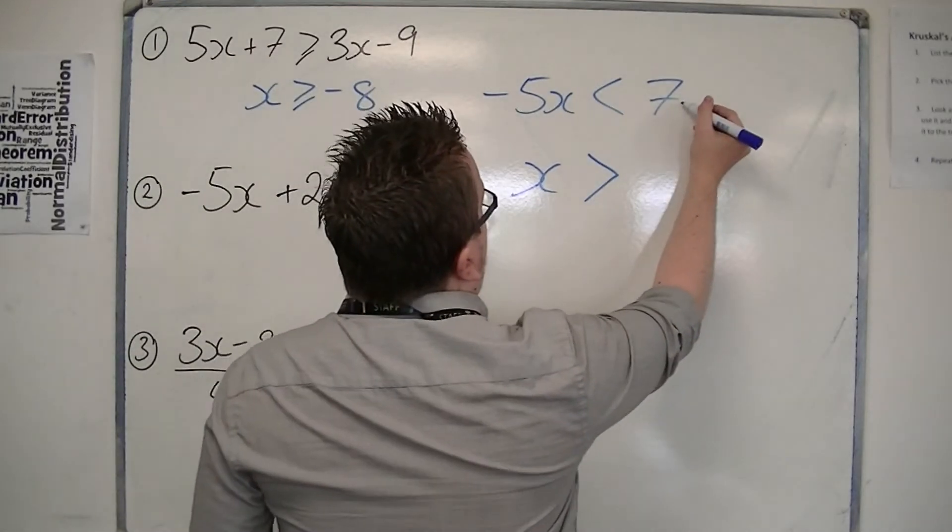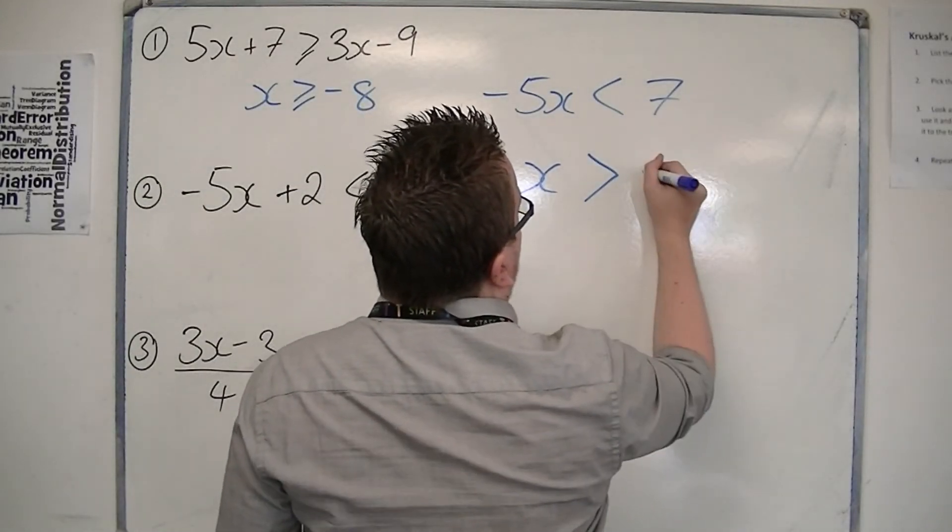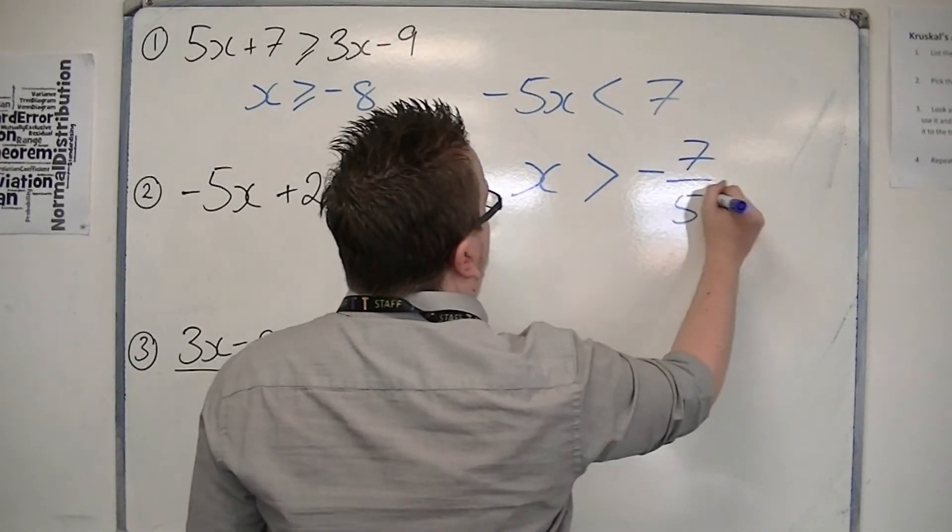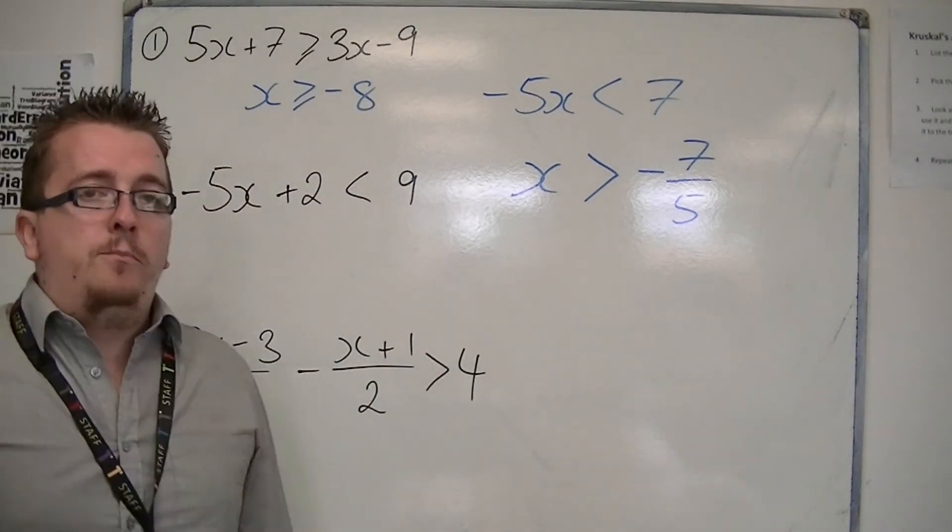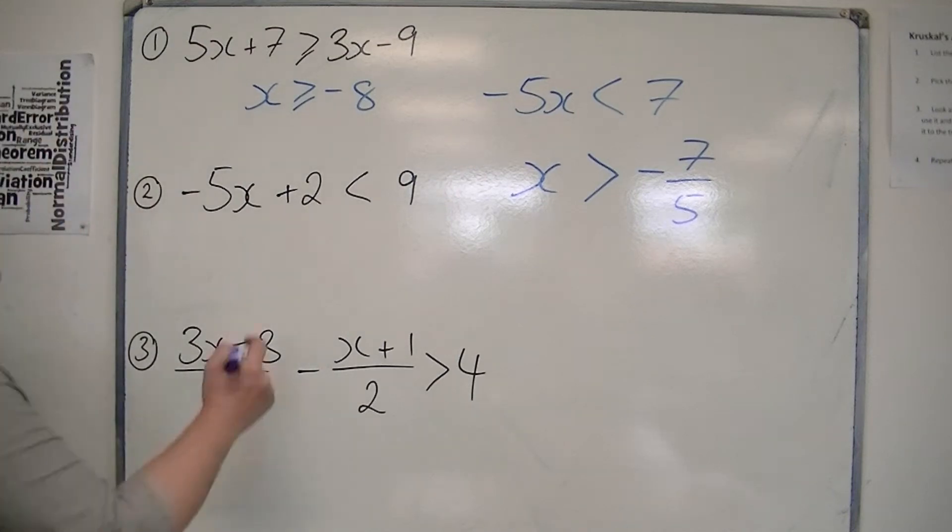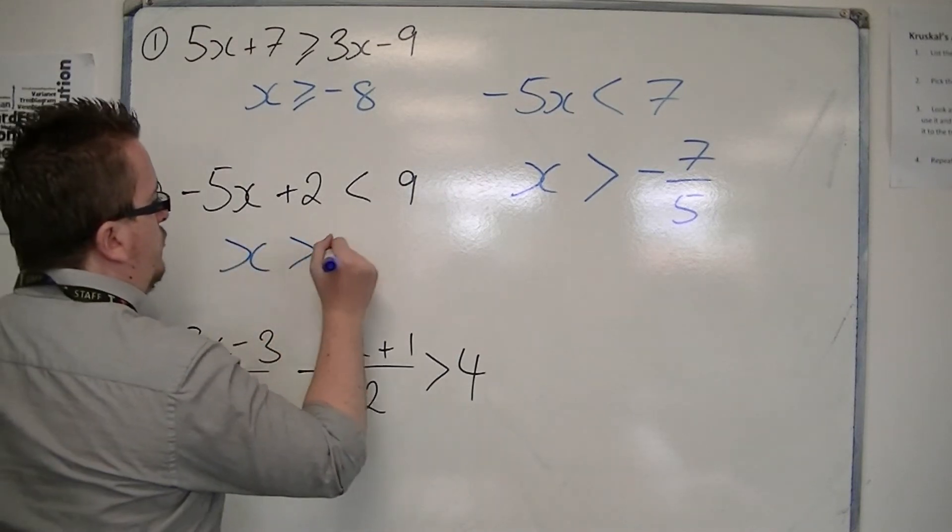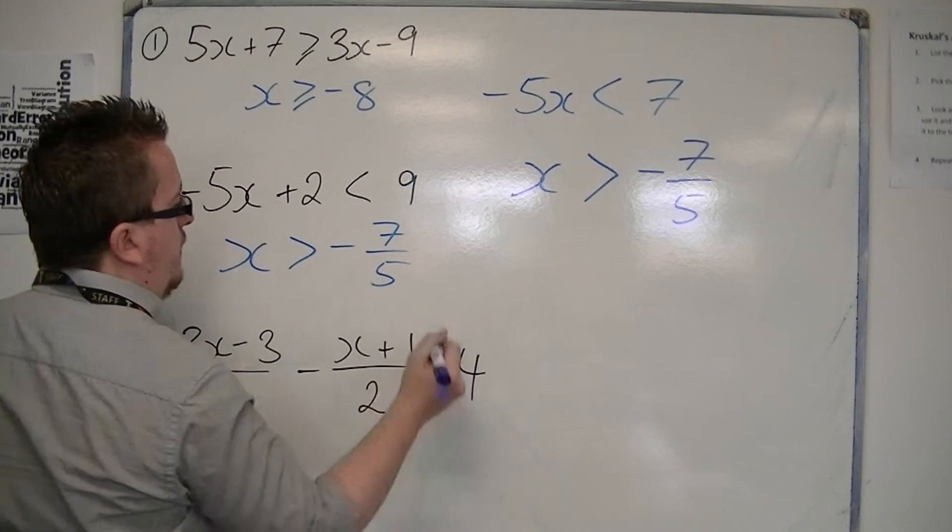So we get x is greater than minus 7 fifths. You could write that as minus 1.4, but we'll leave it as a fraction.